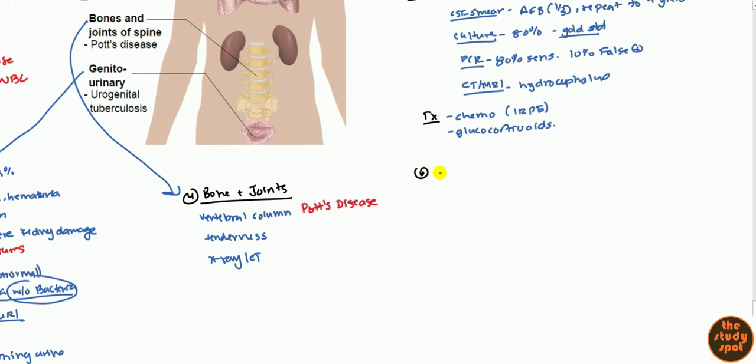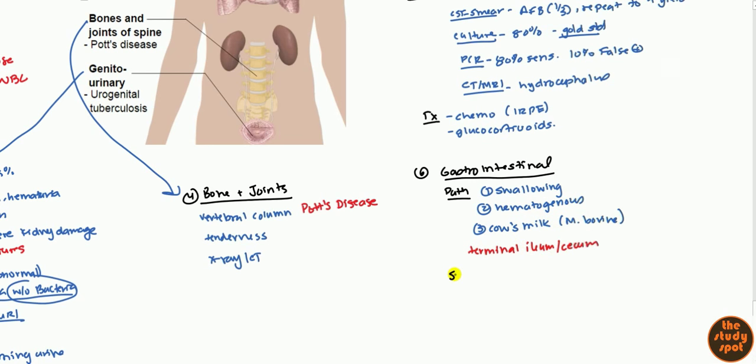Now we can move to the sixth most common site, which is the gastrointestinal. How does it get into the GIT? Either through coughing up and swallowing, through the blood, the hematogenous system, and finally it can be caught through cow's milk, a specific strain called Mycobacterium bovis. The most common site is going to be the terminal ileum and cecum, in the right lower quadrant. What symptoms? You're going to get abdominal pain. The important differential diagnosis is going to be appendicitis. They both occur in the same area, the terminal ileum and cecum. So right lower quadrant, one differential diagnosis is TB, extrapulmonary TB.